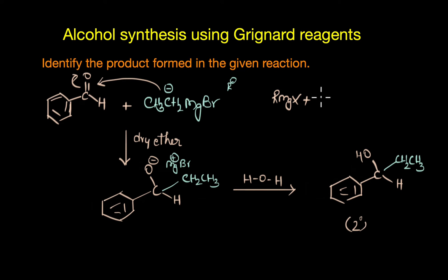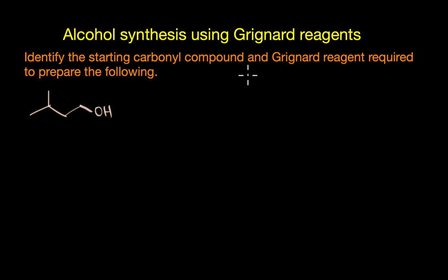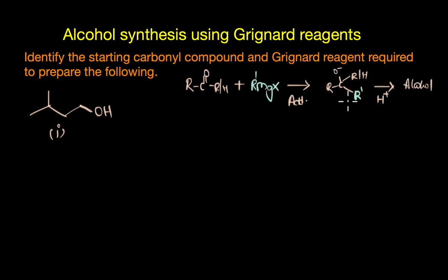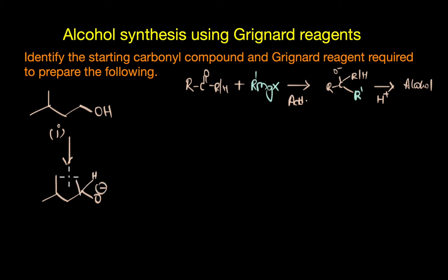So addition of Grignard reagents to aldehydes gives us a secondary alcohol. Now let's look at another question: here we need to identify the starting carbonyl compound and Grignard reagent required to prepare a given primary alcohol. We know alcohol synthesis using Grignard reagents takes place in two steps — nucleophilic addition followed by hydrolysis. To figure out the starting reactants we simply go backwards: the immediate previous step before the alcohol is deprotonation, giving us the alkoxide ion intermediate.